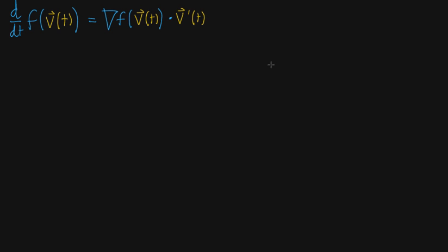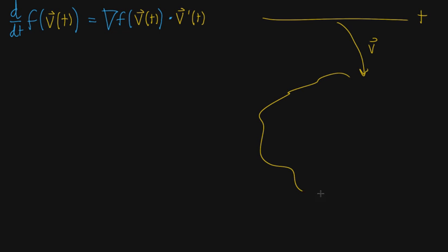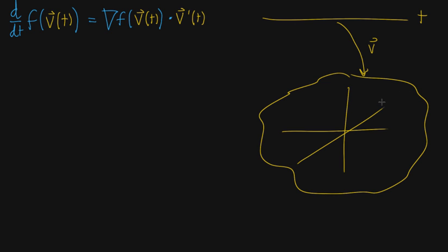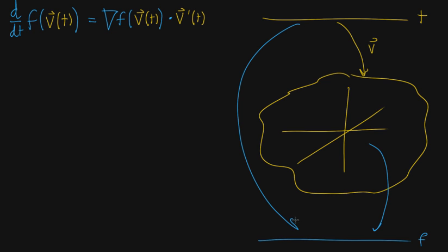Just to remind ourselves of the setup: you're thinking of v as a vector-valued function. This is something that takes as an input t that lives on a number line, and then v maps this to some kind of high-dimensional space. In the simplest case, you might think of that as a two-dimensional space, maybe three-dimensional, or it could be a hundred-dimensional. And then f takes that space and maps it onto the number line.